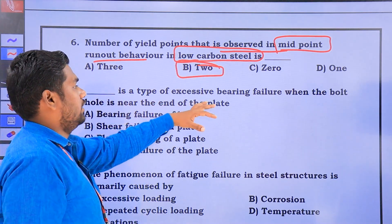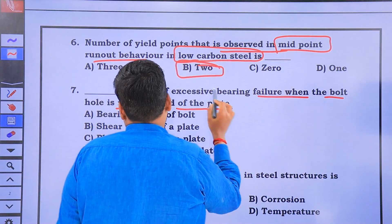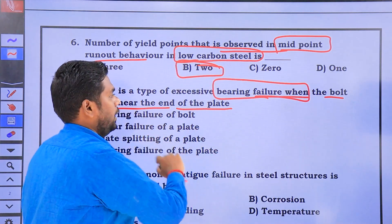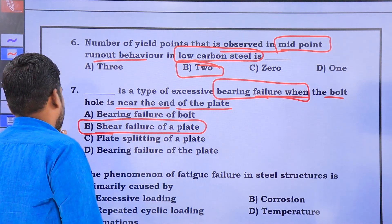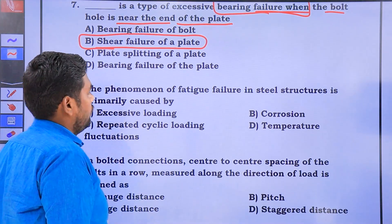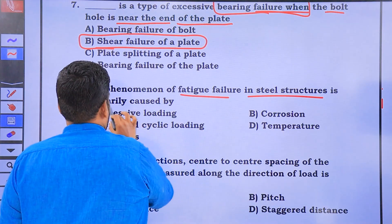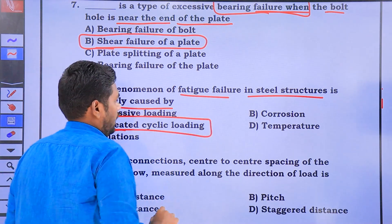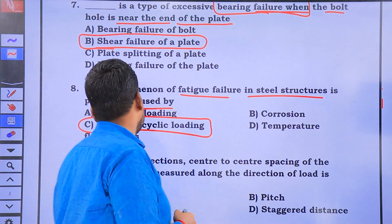The next question: the type of excessive bearing failure when the bolt hole is near the end of the plate — if the nearest bolt hole is near the end of the plate, that is shear failure. The phenomenon of failure in a steel structure primarily caused by repeating cyclic loading is fatigue failure.